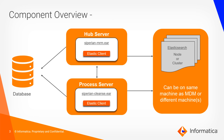In front of us we have a component overview diagram. Traditionally we have seen that we have the hub server, the process server, and the database. The database here would host the CMX system and your ORS schemas. On the right hand side we have an Elasticsearch service. This could either be a node or a cluster. This service can either run on the same machine where MDM is installed or on a completely different independent machine.